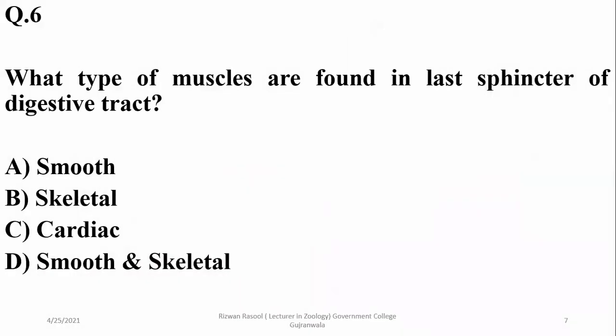What type of muscles are found in the last sphincter of the digestive tract? Most sphincters in the digestive tract are made up of smooth muscles, but the last anal sphincter is made up of skeletal muscles. So the right option is beta.